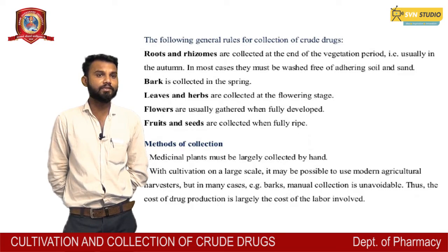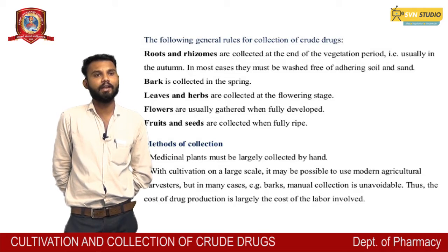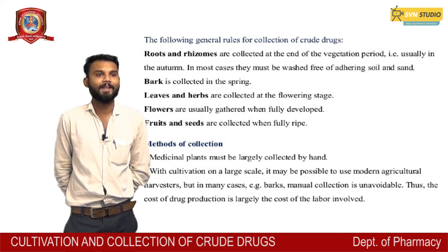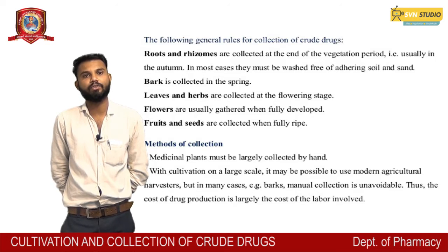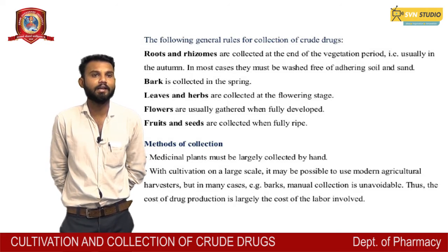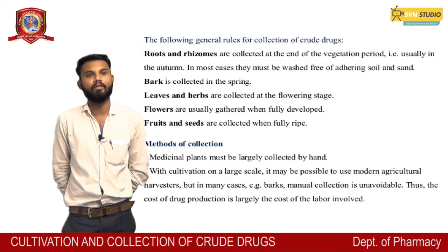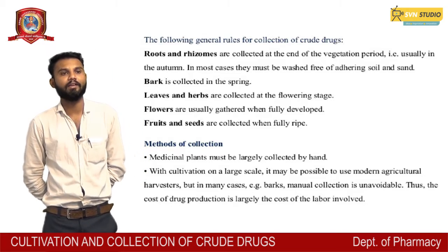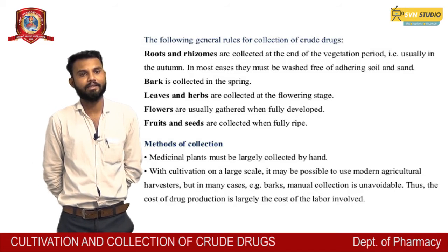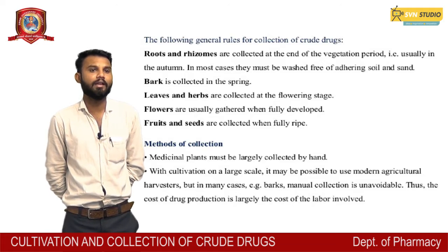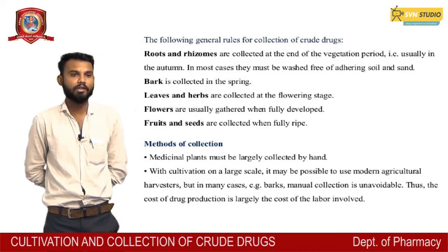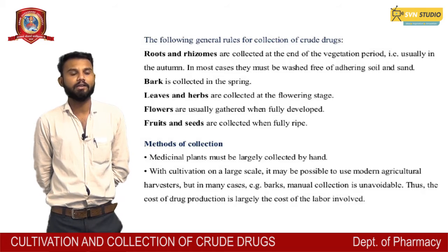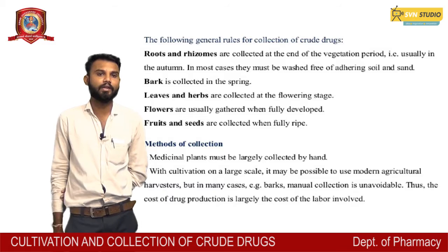Fruits and rhizomes are collected at the end of the vegetative period, usually in autumn. In most cases they must be washed free from adhering soil and sand. Bark is collected in the spring. Leaves and herbs are collected at the flowering stage. Flowers are usually gathered when fully developed. Fruits and seeds are collected when fully ripe. Method of collection: medicinal plants must largely be collected by hand. With cultivation on a large scale, it may be possible to use modern agricultural harvesters, but in many cases, such as barks, manual collection is unavoidable. Thus, the cost of drug production is largely the cost of the labor involved.